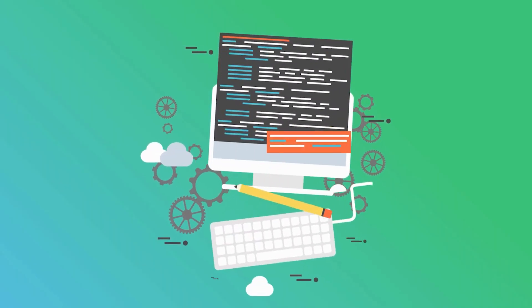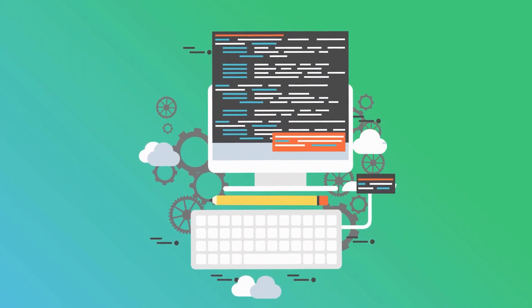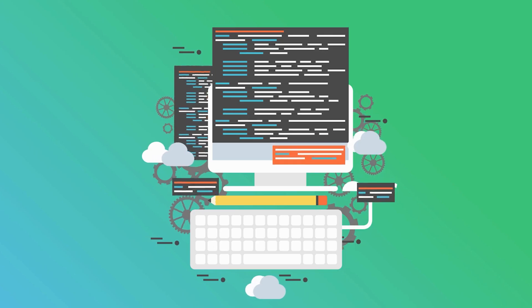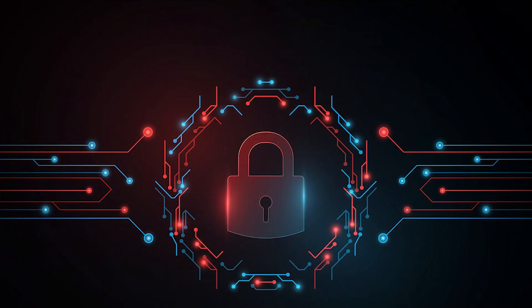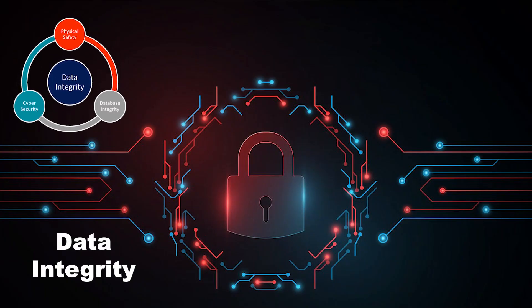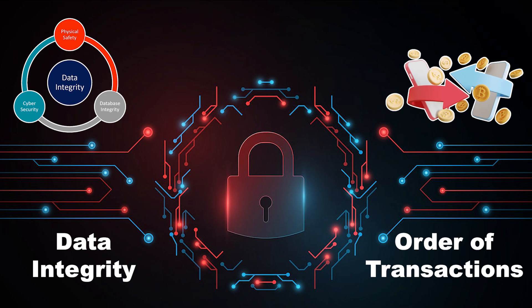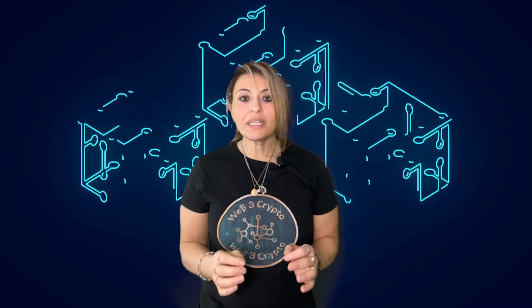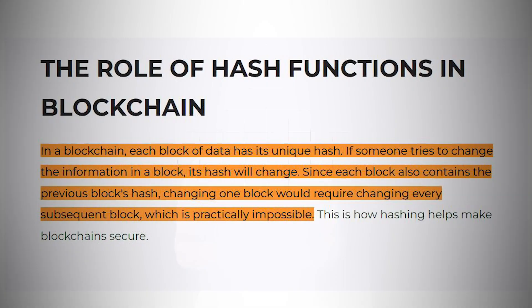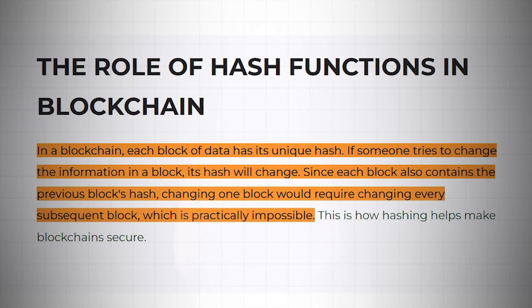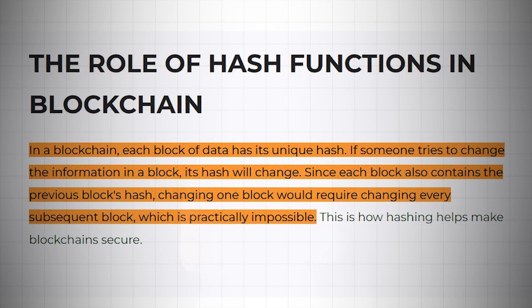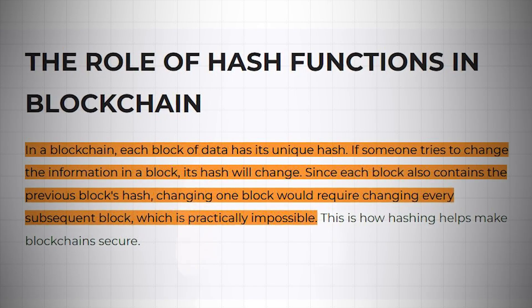The brilliance of hashing in Bitcoin lies in its security and efficiency. Hashes help verify the data integrity and order of transactions without revealing their actual content. They also make it extremely difficult to alter any aspect of the blockchain, because changing even a tiny part of the transaction would alter its hash and break the chain.